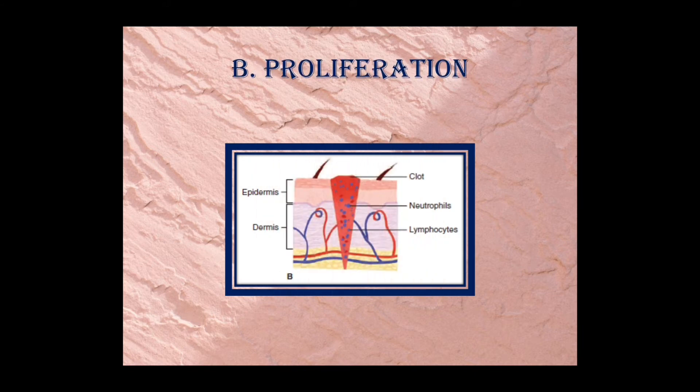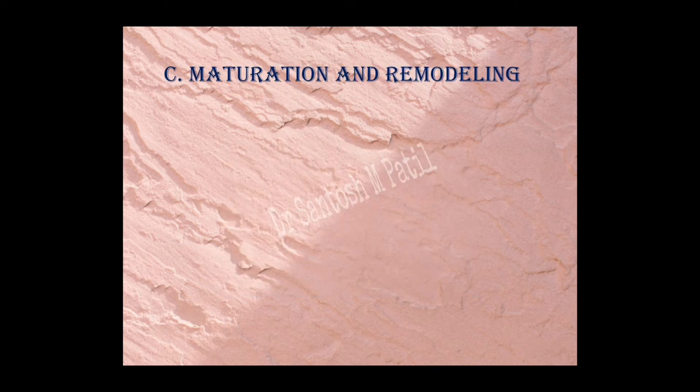This picture of the proliferation phase shows lymphocytes and neutrophils clearing the debris, a clot formed to prevent further blood loss, and fibrin deposited. The last phase is how the collagen matures and how collagen contraction takes place to prevent abnormal scar formation — what we term reorganization of the synthesized collagen. There is a process called collagenolysis and collagen synthesis, and the net product is excessive collagen production with remodeling.